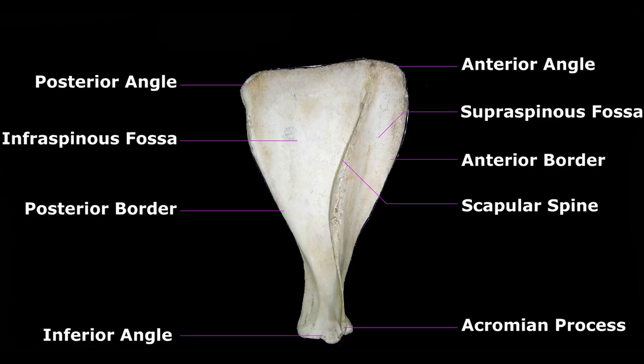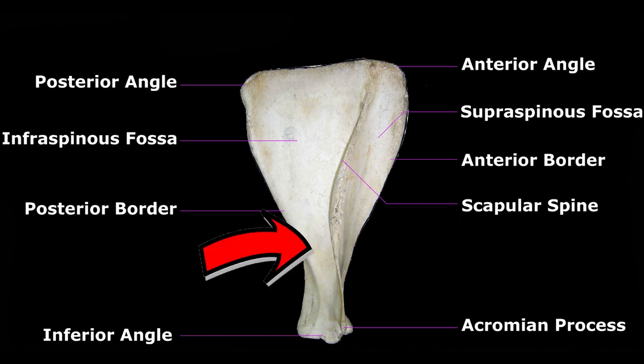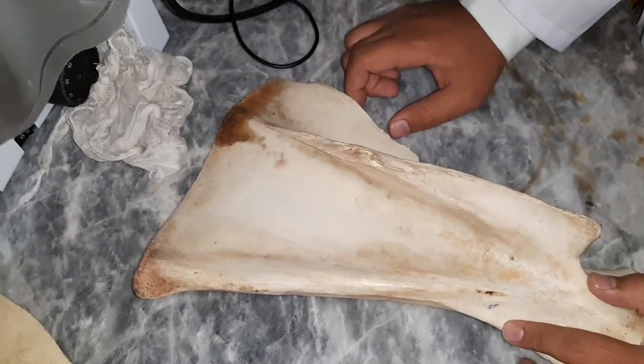Welcome to our YouTube channel. Today we are going to discuss the scapula of ox. First of all, we should know either it is right or left scapula. For this, we should know that the area that has less ratio on the lateral side is the cranial one, and the area that has more ratio on the lateral side is the caudal one. By putting it parallel to our arms, we can determine either it is right or left scapula.